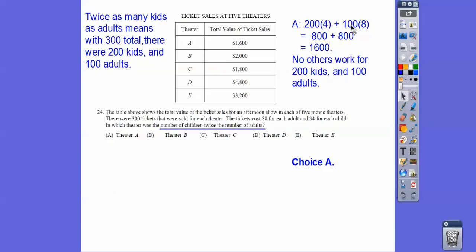So the kids are four bucks, so 200 times four, and the adults are $8, so 100 times eight. You're going to do 200 times four, and so which one's going to give us 1,600 bucks? Only choice A gives us 1,600 bucks. The other ones don't do that. That's the only one that fits this problem right there.